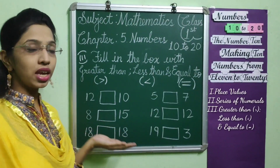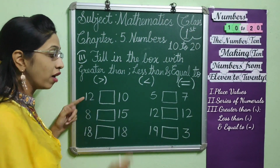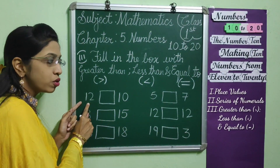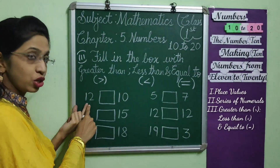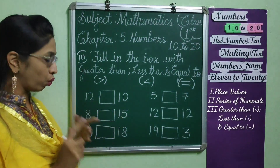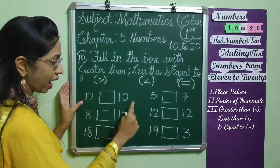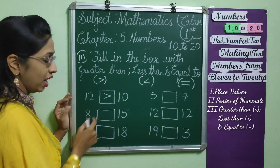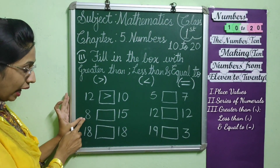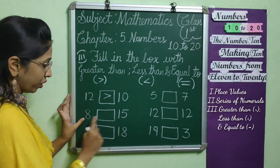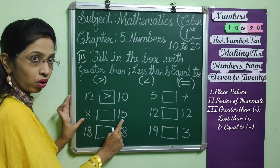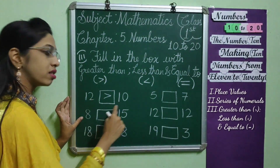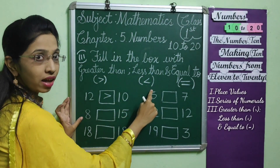Similarly, we will see a few more examples. In the first example, I have two different numbers: 12 and 10. 12 is a bigger number than 10, so we will say 12 is greater than 10. The symbol of greater than is this. Now, the next two numbers are 8 and 15. 15 is the more number, so here we will say that 8 is less than 15. The symbol of less than is this.